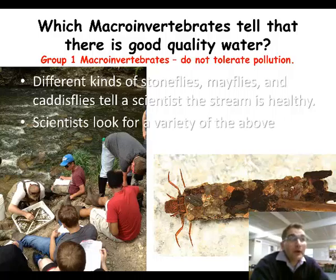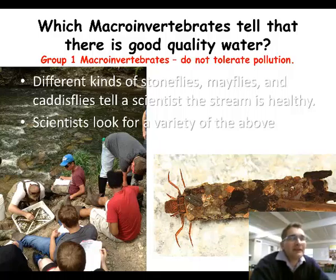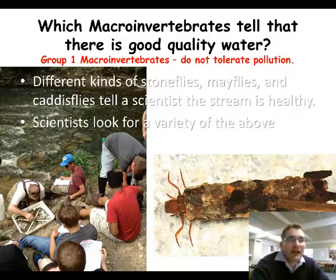So while we are going through and finding populations of organisms — these macroinvertebrates — we are going to be looking for mayflies, stoneflies, and caddisflies in order to tell if the stream is a healthy environment for our salmon to survive.